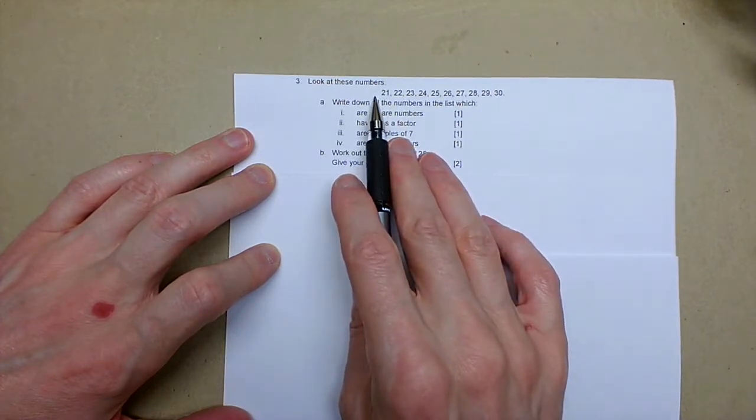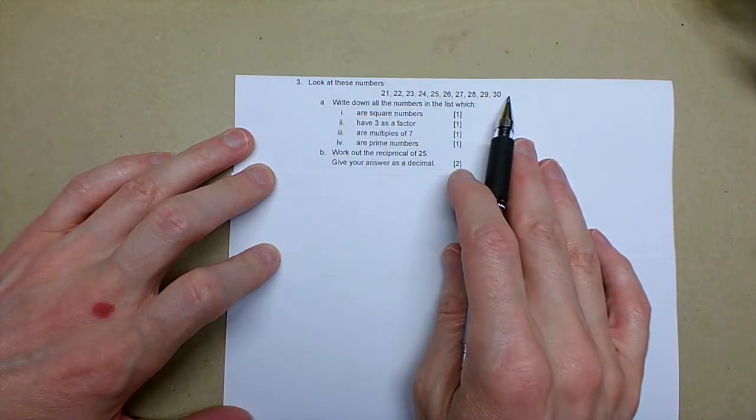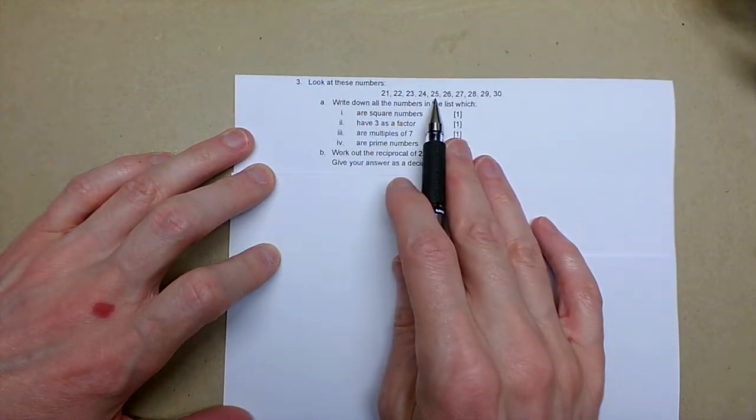Well, four fours are 16 which would be outside, five fives 25, six times six is 36, so the only one is 25.